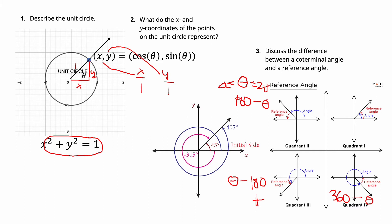If the angle is negative — like negative 45 — that puts it in the same place as positive 45. The reference angle is just 45. The reference angle is always a number between 0 and 90, never negative. That's how coterminal and reference angles relate.